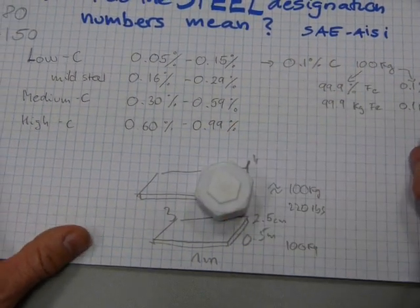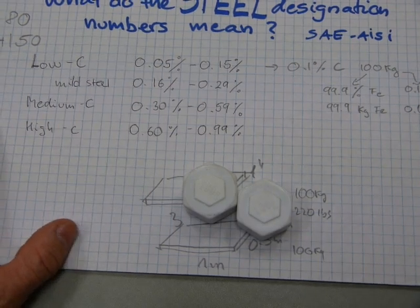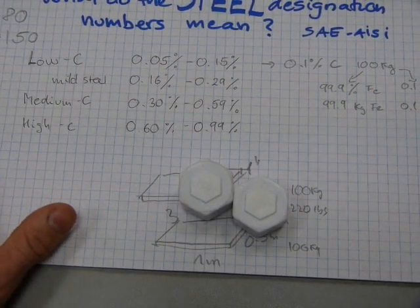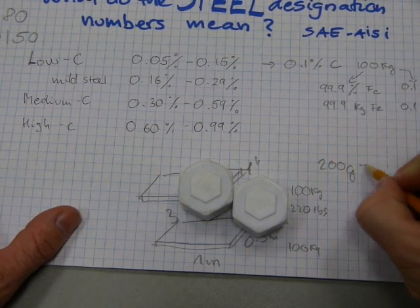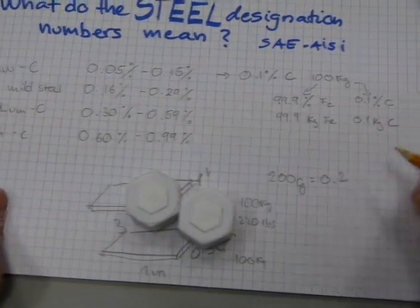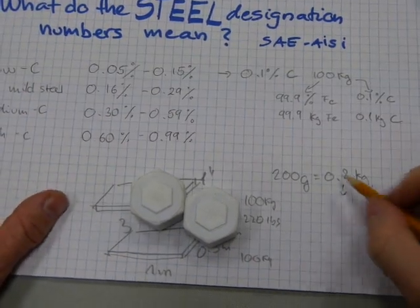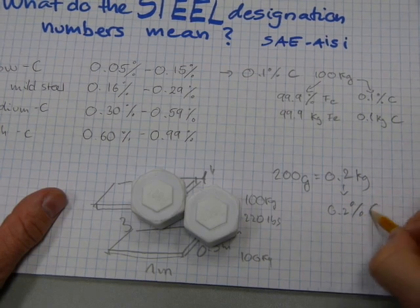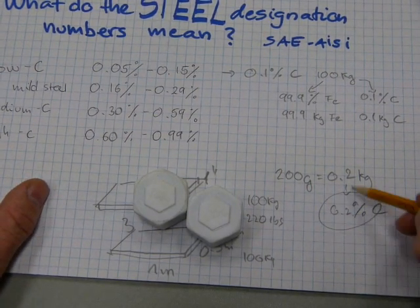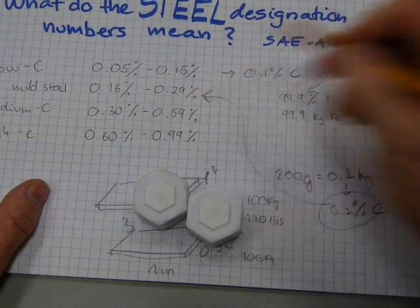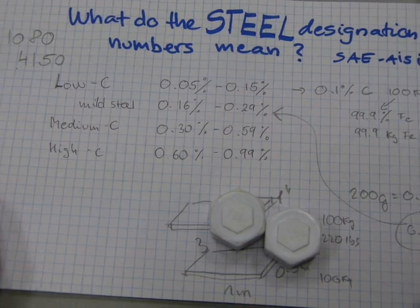If it's got say twice as much carbon, 200 grams of carbon, which is 0.2 kilograms of carbon, yeah 200 grams is the same as 0.2 kilograms, that means that it's got 0.2 percent carbon in it. And if it's got 0.2 percent carbon in it, it is mild steel.